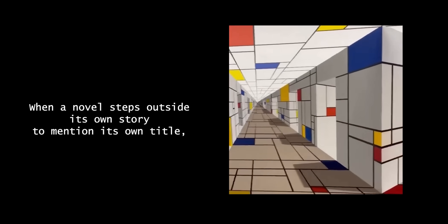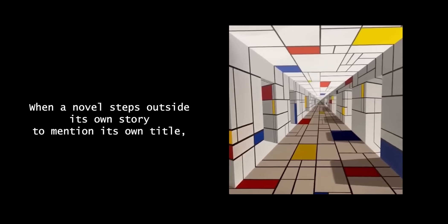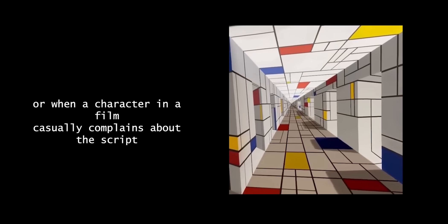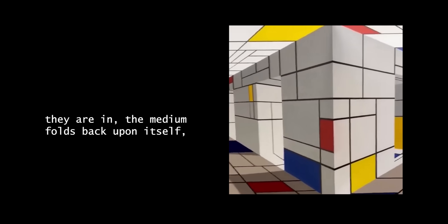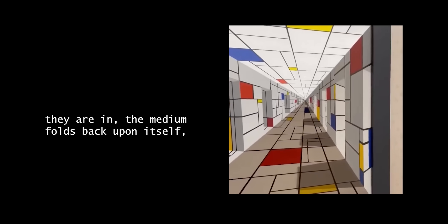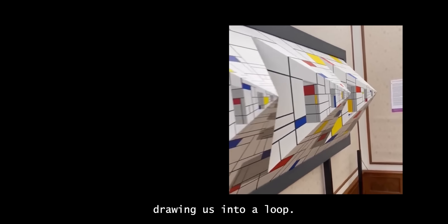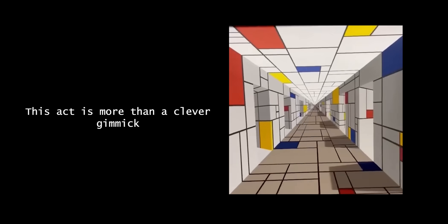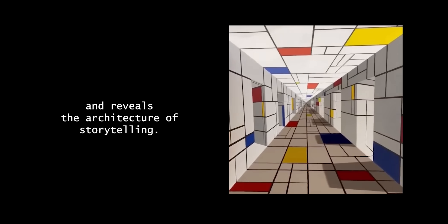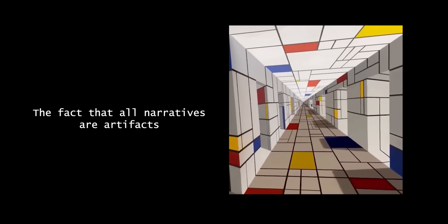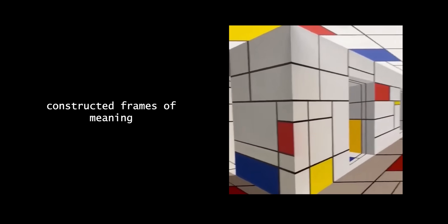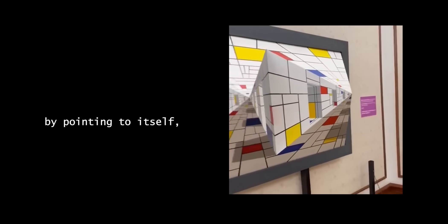When a novel steps outside its own story to mention its own title, or when a character in a film casually complains about the script they are in, the medium folds back upon itself, drawing us into a loop. This act is more than a clever gimmick. It reveals the architecture of storytelling, the fact that all narratives are artifacts, constructed frames of meaning. By pointing to itself, the story pulls the thin veil into view.